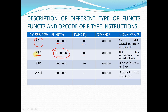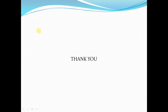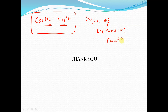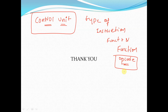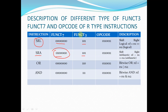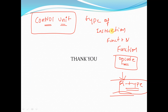Together, different combinations of funct7 and funct3 decide which type of instruction it is. We will develop a unit called the control unit that decides the instruction type using funct7, funct3, and the opcode. The opcode is a broad category — if the opcode is 0110011, it is R-type — and then funct7 and funct3 determine the specific operation. That's all for today's session.